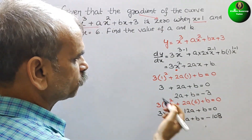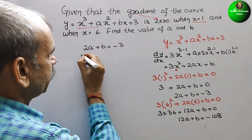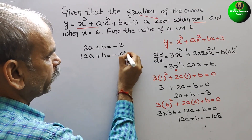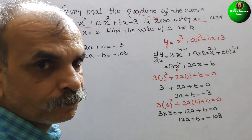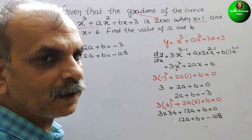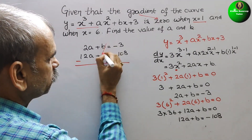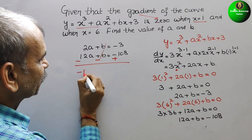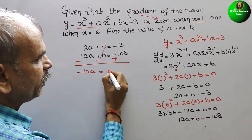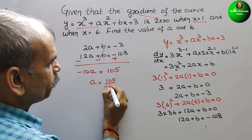So we will write these two equations: 2a plus b equals minus 3, and 12a plus b equals minus 108. Now solve this. The coefficient of b is 1 in both equations, so we will subtract. Subtracting the first from the second: 10a equals minus 108 minus (minus 3), which gives 10a equals minus 105.